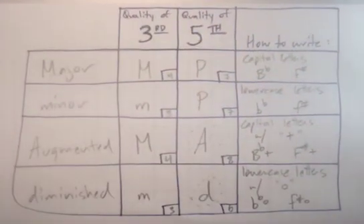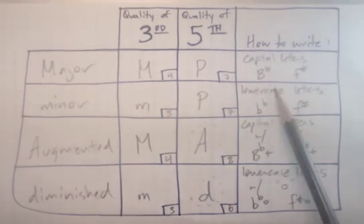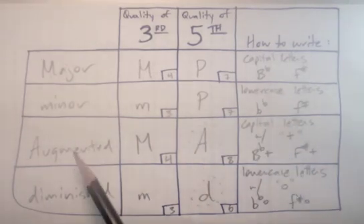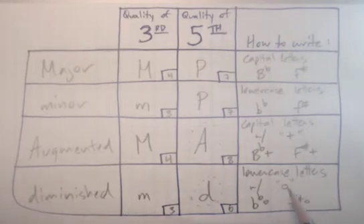Same goes for augmented and diminished. There's many different ways to use nomenclature to identify these triads. But for our purposes, let's stick with: major is capital letters with nothing else, minor is lowercase letters with nothing else, augmented is capital with a plus sign for the sharp five, and diminished triads are lowercase with the degree sign or the lowercase O. You don't have to worry about if you type this in your computer—it's okay to use lowercase O because doing the whole superscript thing can be a pain. Anyway, this is the triad grid.